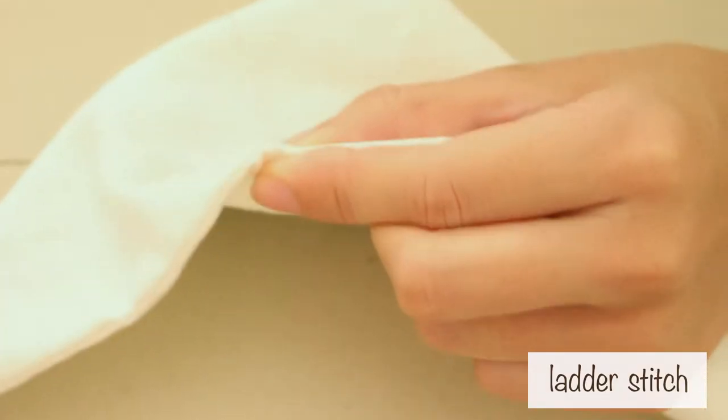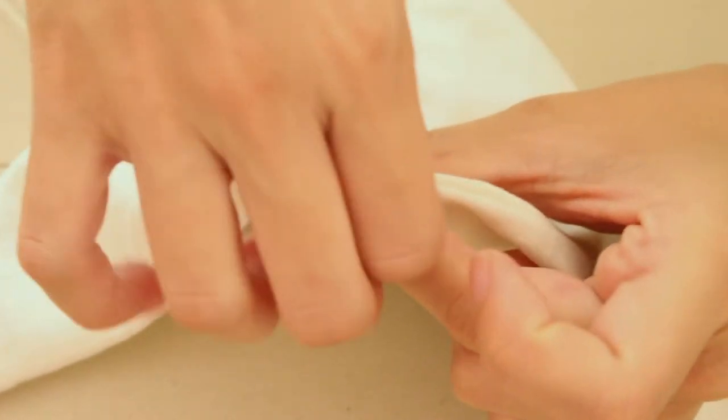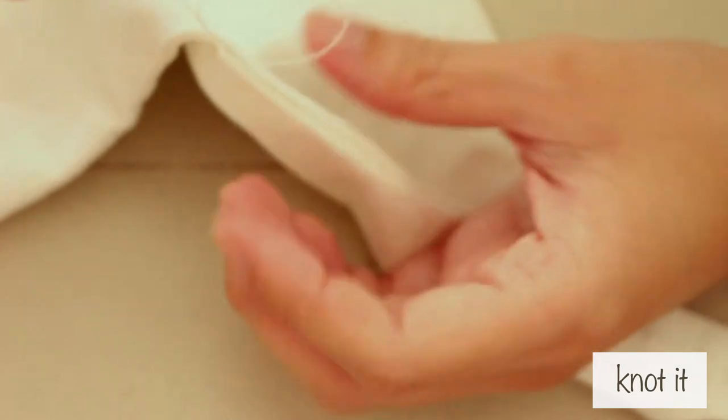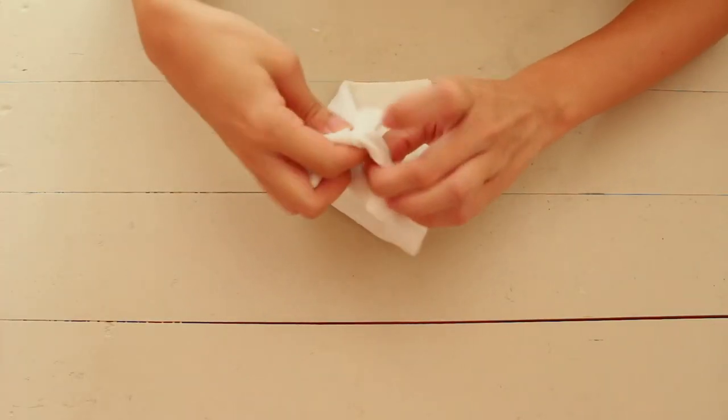To do this, make a stitch on one side, cross over to the other side, make a stitch, and cross over again. Iron it, tie a knot, and you're done.